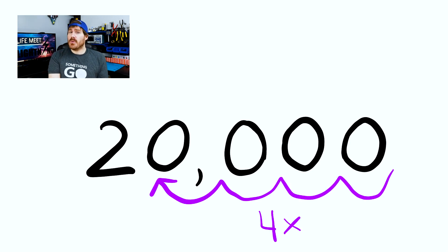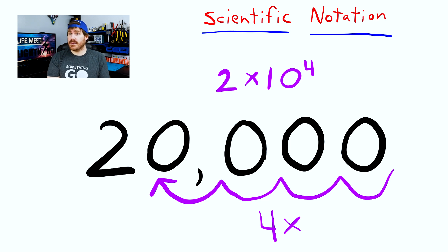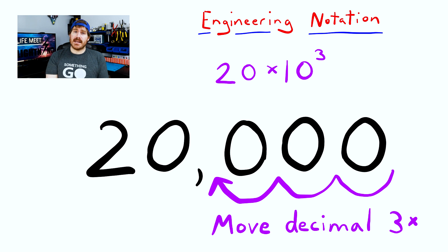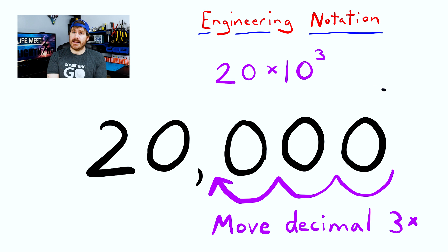Let's take a look. Here we have the number 20,000. In scientific notation, we would move the decimal over 4 times so that we would end up with only 1 digit to the left of the decimal. However, in engineering notation, we move the decimal in multiples of 3. So to convert 20,000 to engineering notation, it would look like this.